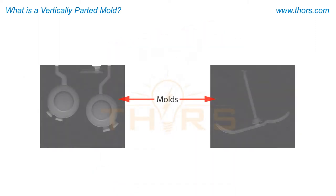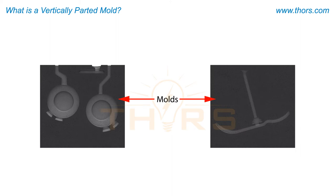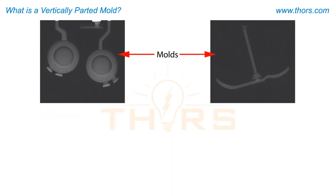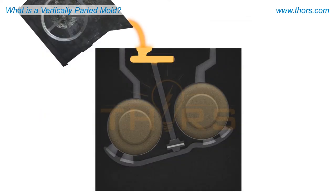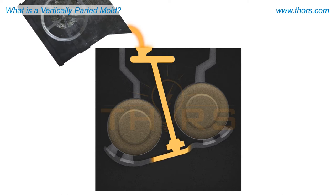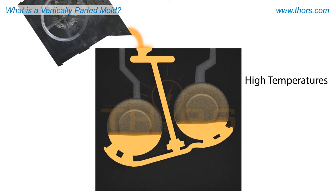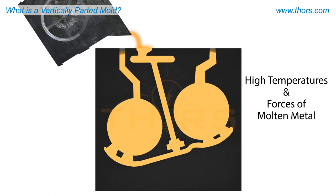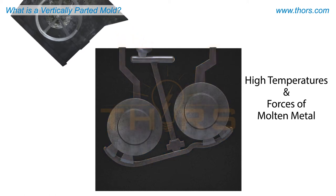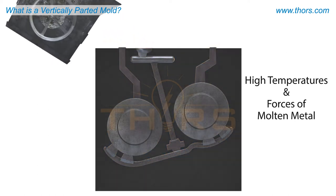Each side of a mold is made using a mold pattern. For a mold to be effective, it needs to be strong enough to withstand the high temperatures of the molten metal and the forces of the molten metal flowing through and solidifying in the mold.